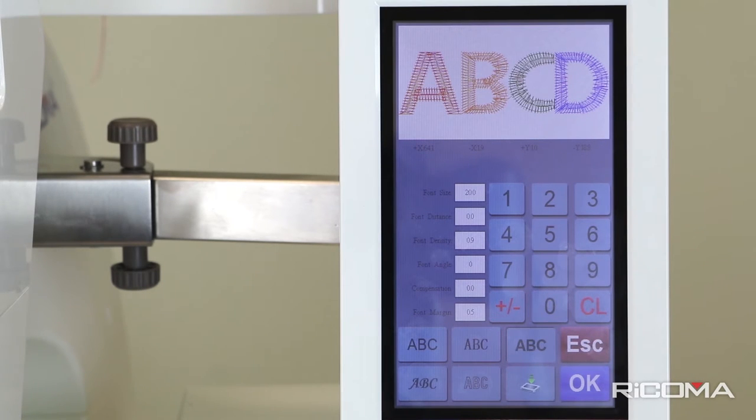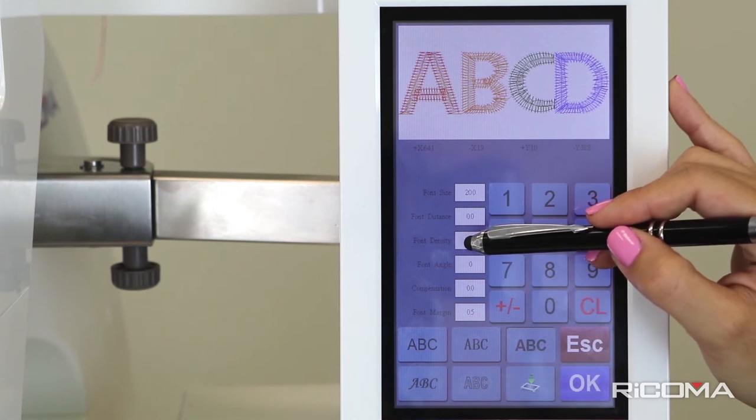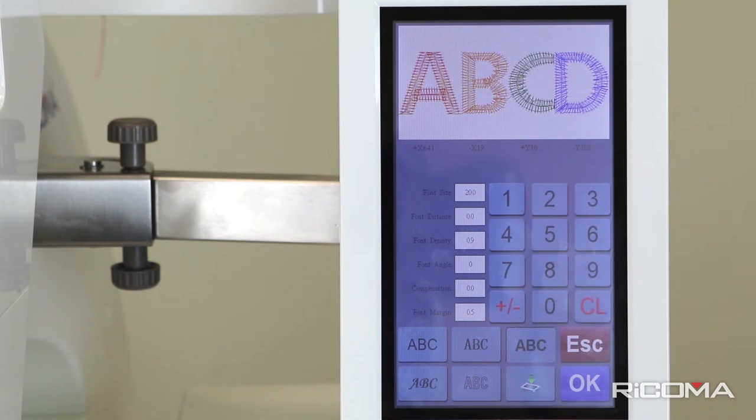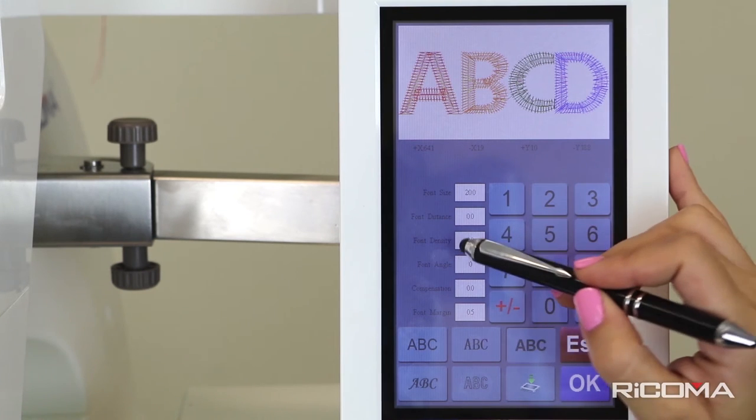You can now edit your design by adding more density, distance, size, compensation, or other options by simply making the selection and pressing OK.